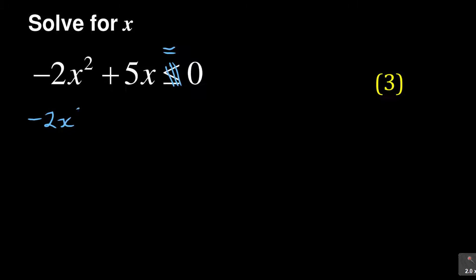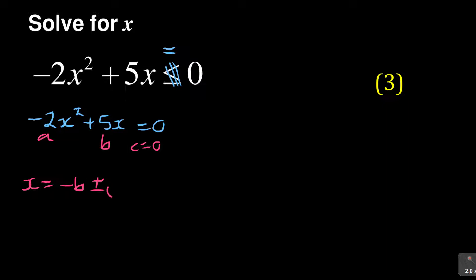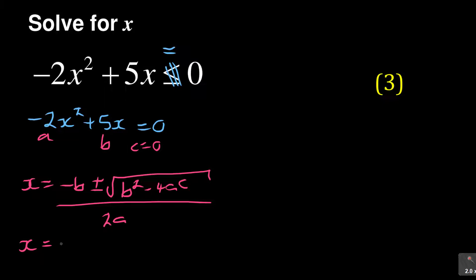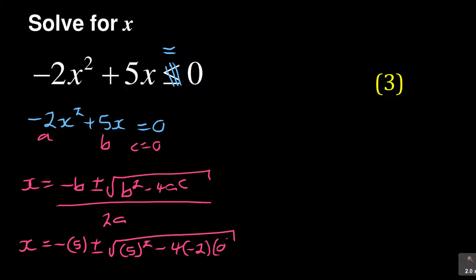So what you have is minus 2x squared plus 5x is equal to 0. It's like you're solving for x, and when you're doing that, this is your a, this is your b, and we don't have our c, so our c is equal to 0. In the quadratic formula, x is equal to minus b plus or minus square root of b squared minus 4ac over 2a. So x would be equal to minus 5 plus or minus square root of 5 squared minus 4 times negative 2 times 0, all divided by 2 times negative 2.